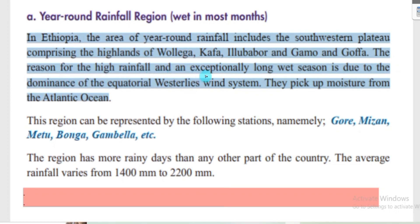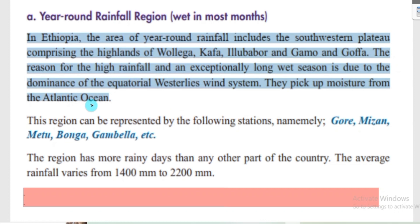The reason for the high rainfall and exceptionally long wet season is due to the dominance of Equatorial Westerlies. The southwestern part of Ethiopia is dominated by Equatorial Westerlies, which originate from the Atlantic Ocean. This wind system picks up moisture from the Atlantic Ocean, and being moisture-laden, it provides rainfall for the southwestern part of Ethiopia.